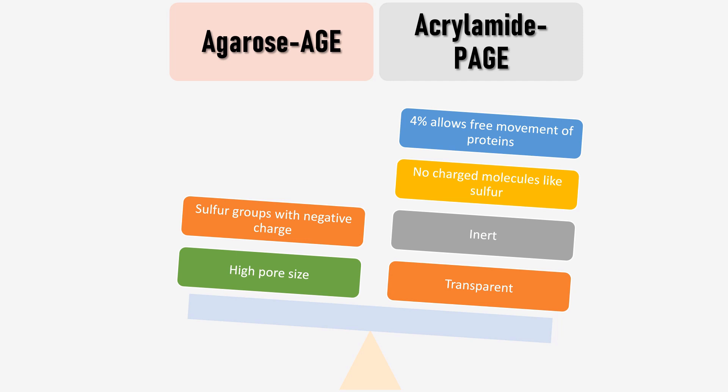Isoelectric focusing can be done using agarose gel or acrylamide gel. Agarose gel has a high pore size but contains sulfur groups with negative charge, so this may interfere. A 4% preparation of acrylamide gel allows free movement of proteins. Acrylamide gel contains no charged molecules like sulfur, so it is inert and transparent. Thus acrylamide gel is preferred for IEF.